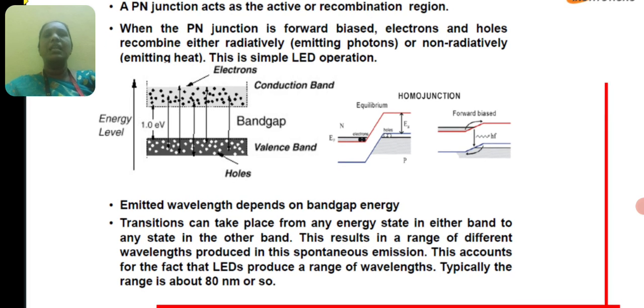...electrons and holes are recombined, either radiatively, that is emitting photons, or non-radiatively, that is emitting heat. This is simple LED operation. The emitted wavelength depends on the bandgap energy.